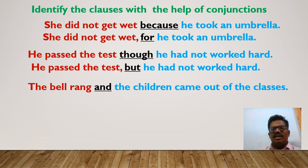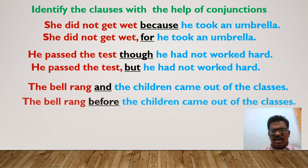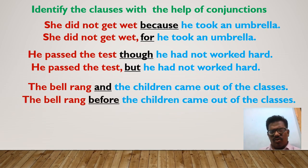In this sentence, 'the children came out of the classes' will be the main clause because it has the coordinating conjunction 'and' before it. In the next sentence, the same clause 'the children came out of the classes' will be the subordinate clause because it has a subordinating conjunction before it.